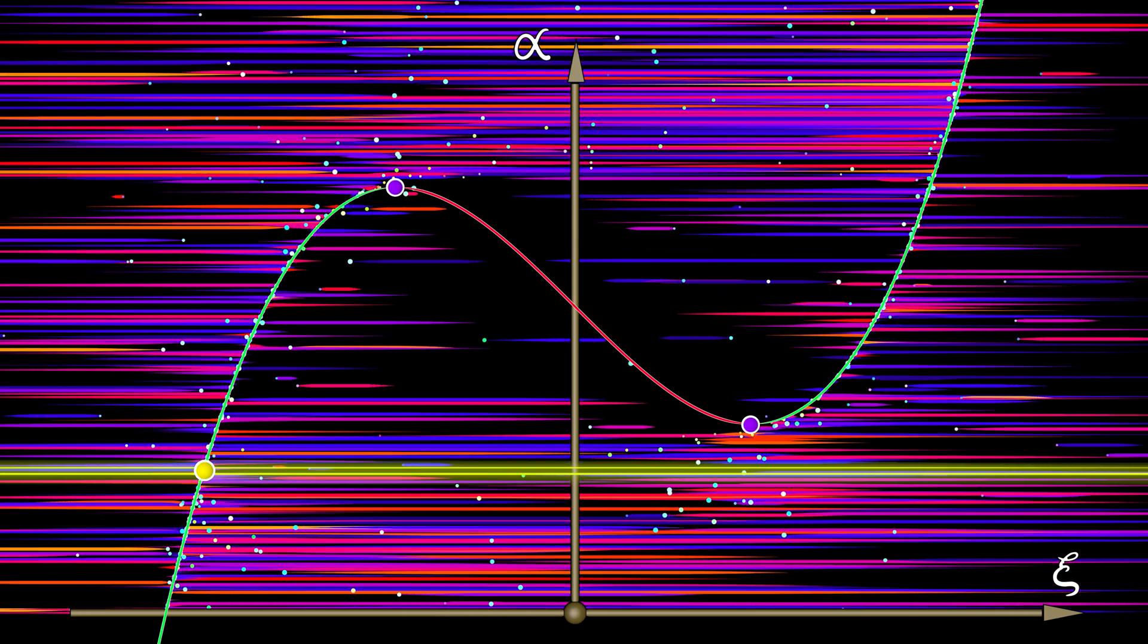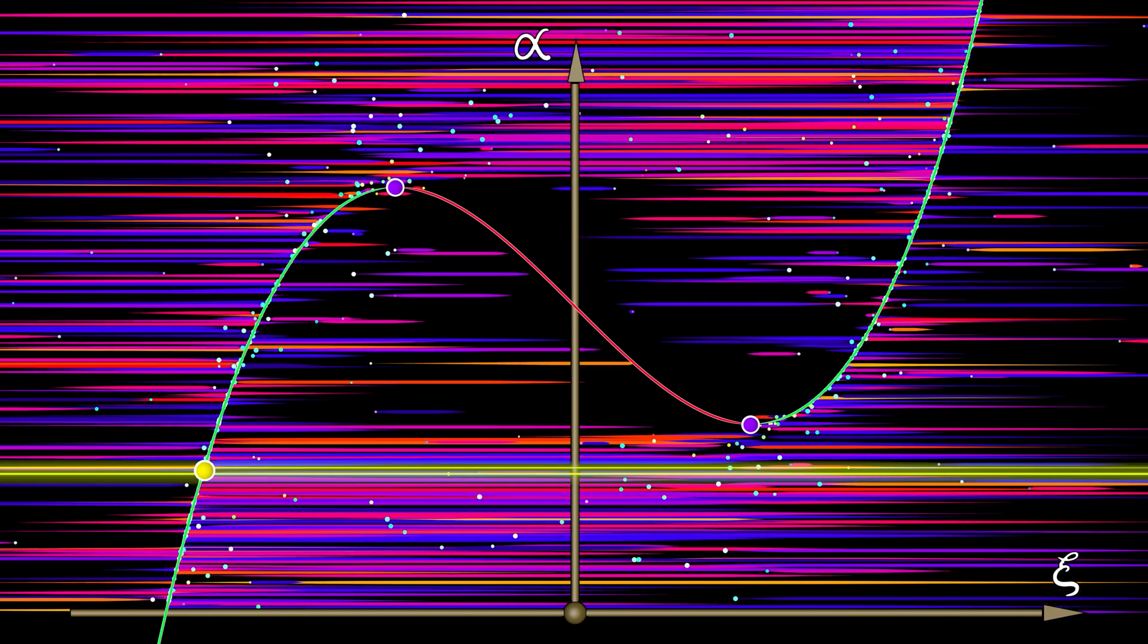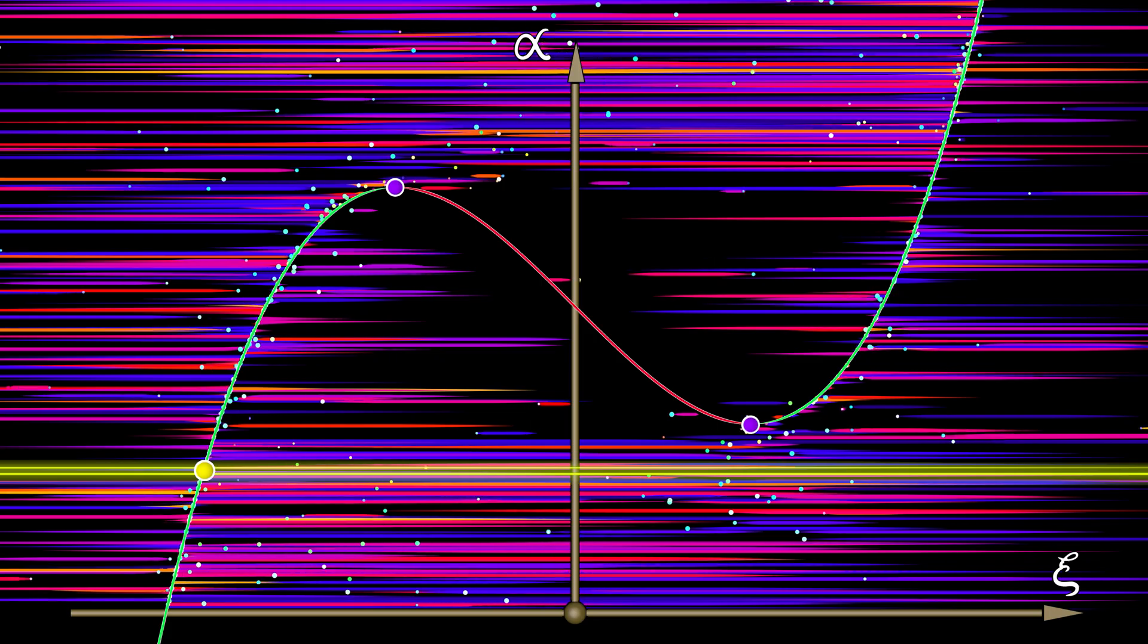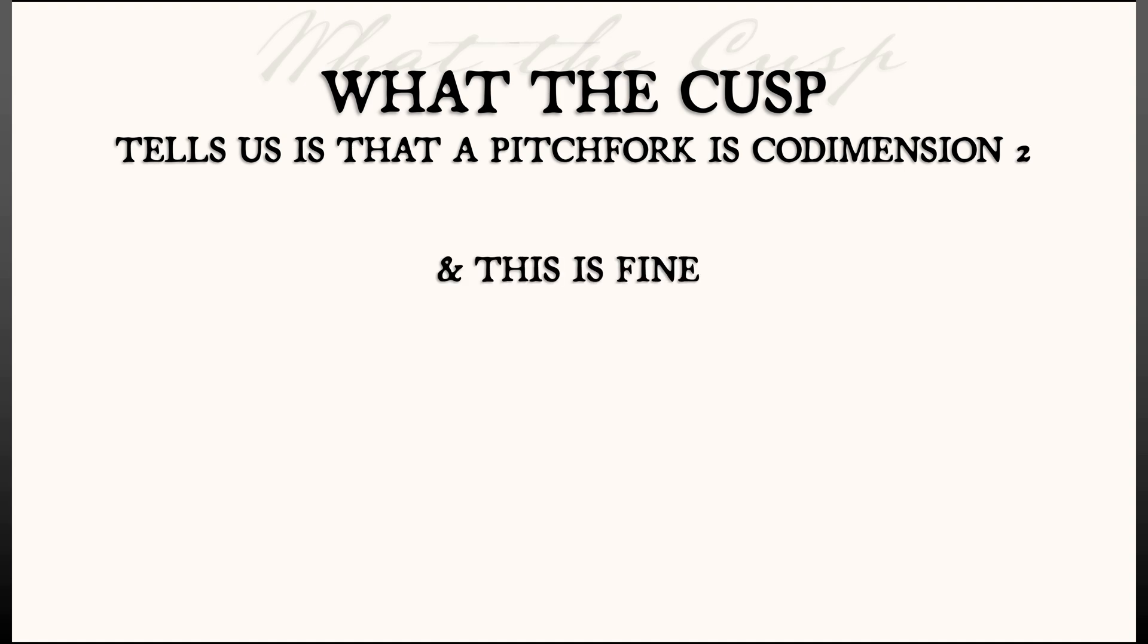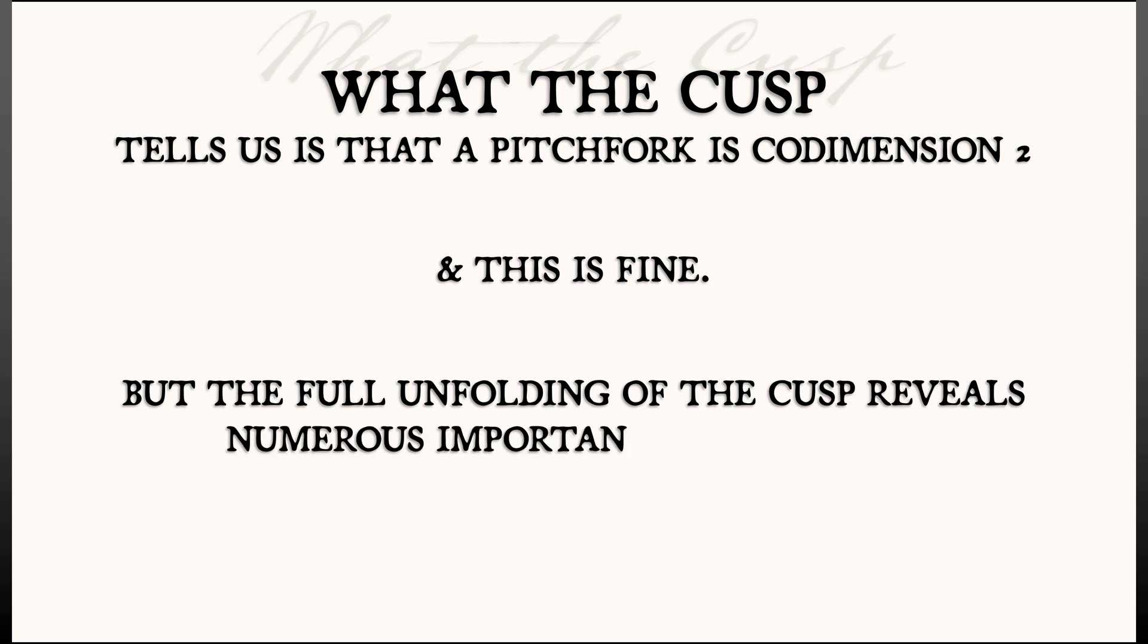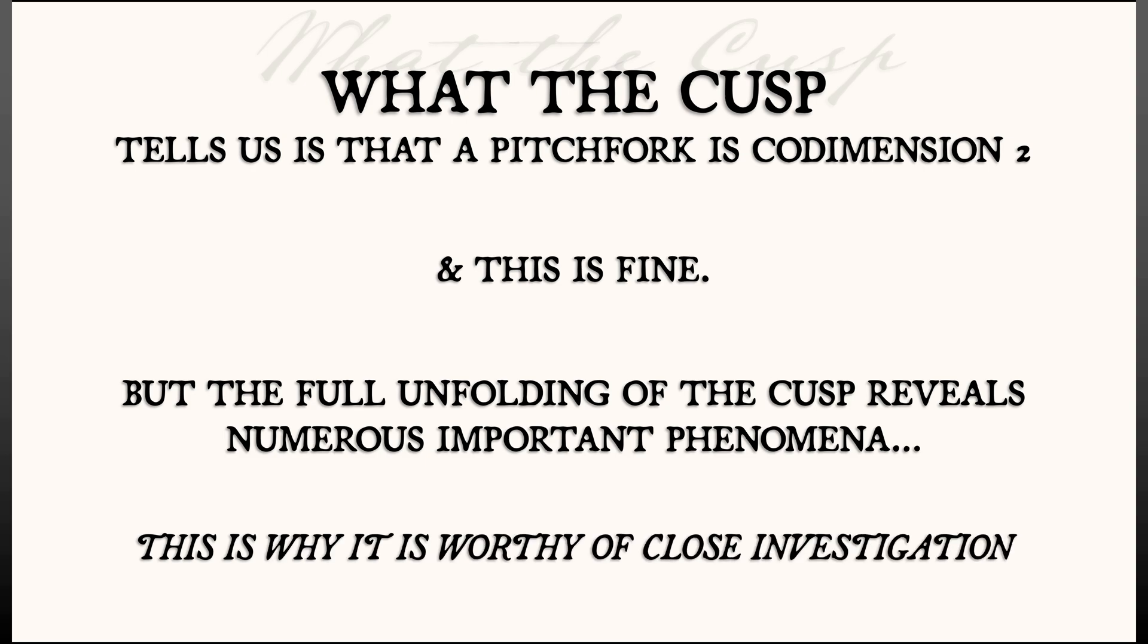This behavior that we have seen in pitchfork bifurcations is fully unfolded here in the cusp. What this cusp tells us is that the pitchfork is of codimension two, and this is great, but the full unfolding reveals a number of interesting phenomena. This is why, like all bifurcations, it is worthy of close investigation.